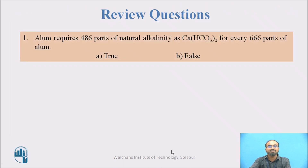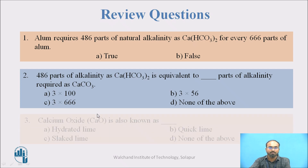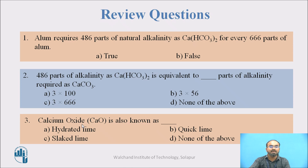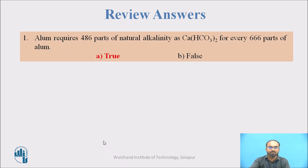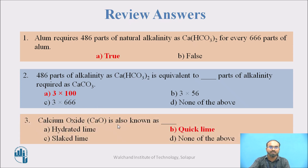Review questions: First — alum requires 486 parts of natural alkalinity as CaCO₃ for every 666 parts of alum; true or false? Second — 486 parts of alkalinity as Ca(HCO₃)₂ is equivalent to how many parts of alkalinity as CaCO₃: 3 × 100, 3 × 56, 3 × 666, or none of the above? Third — calcium oxide is also known as hydrated lime, quick lime, slaked lime, or none of the above? Answers: first is true; second is 3 × 100; third is quick lime.